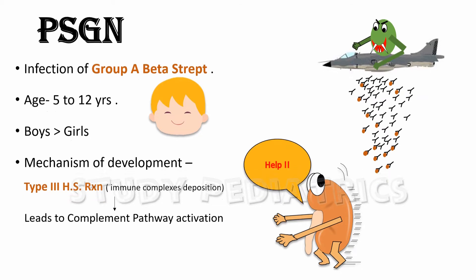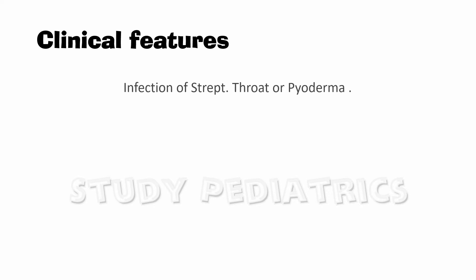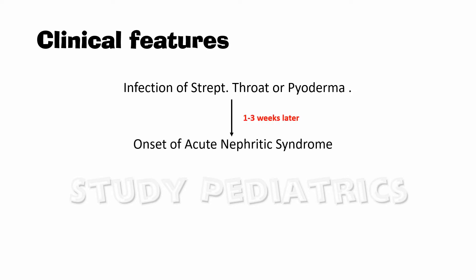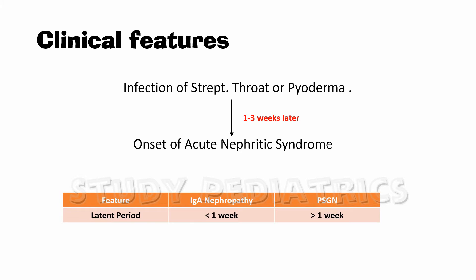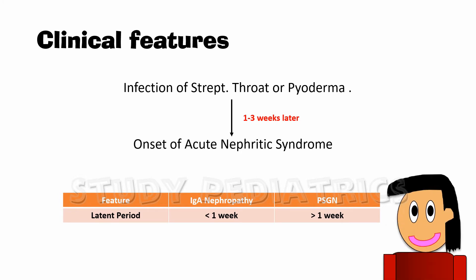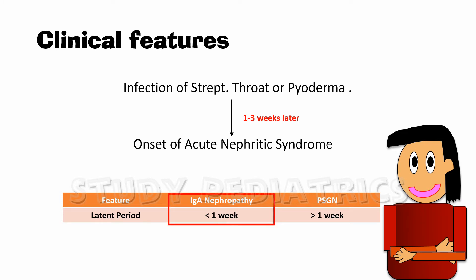The clinical features begin as an infection of the throat or pyoderma, but later, typically in 1 to 3 weeks, immune complexes settle in the kidney and produce the bunch of clinical features collectively known as nephritic syndrome. Importantly, if nephritic syndrome occurs in less than 1 week of infection, IgA nephropathy is usually considered as the cause.